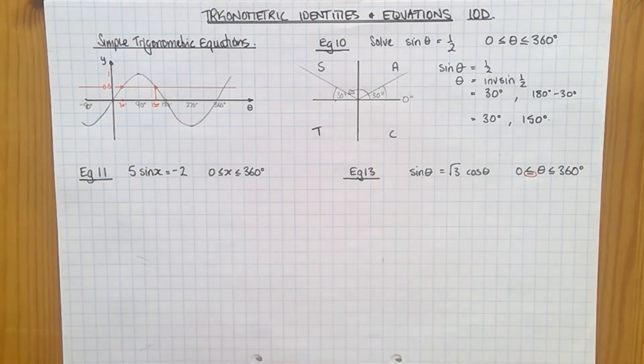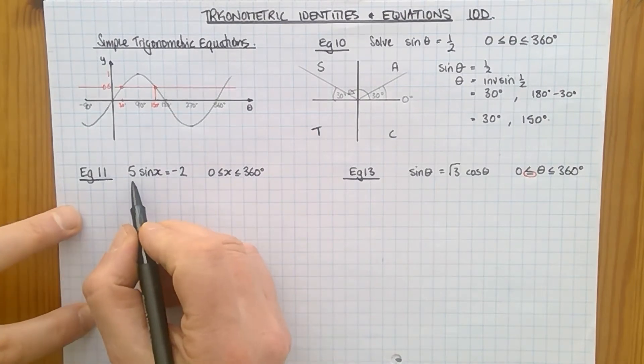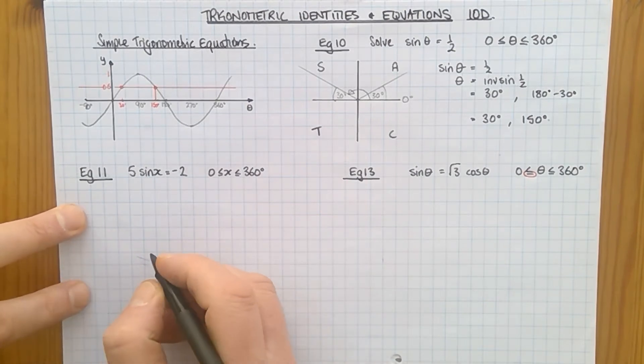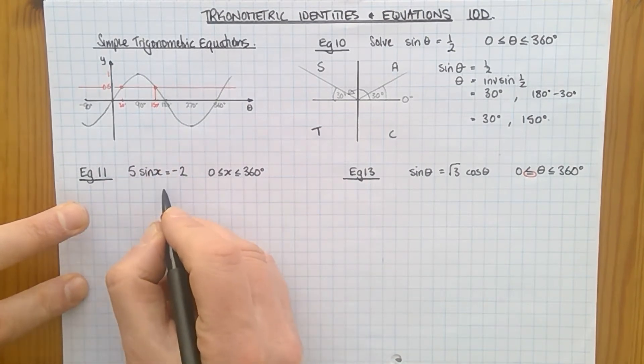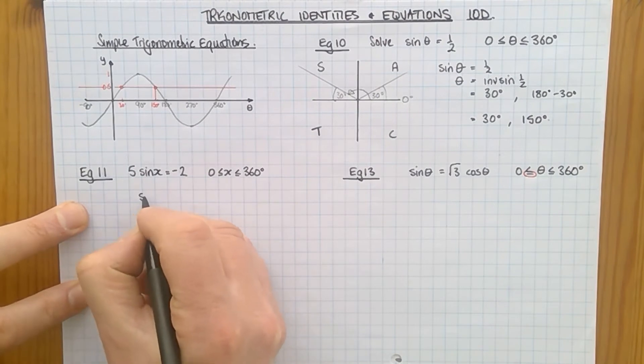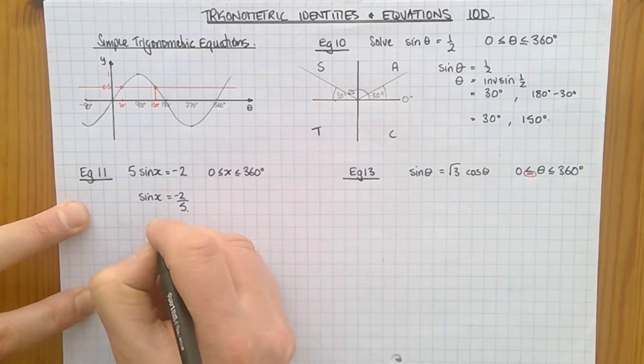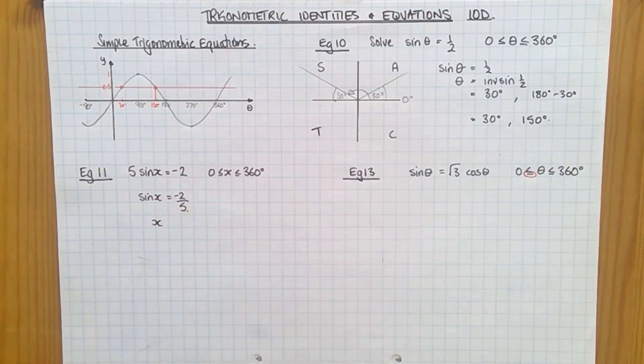So let's have a look at another question. This is example 11 in the textbook. So 5 sin x is minus 2. x has to be between 0 and 360. Well, it's a bit difficult to sort it out as it is there. So I'm just going to rearrange that. Sine x is minus 2 over 5.